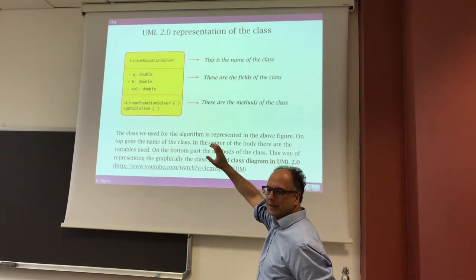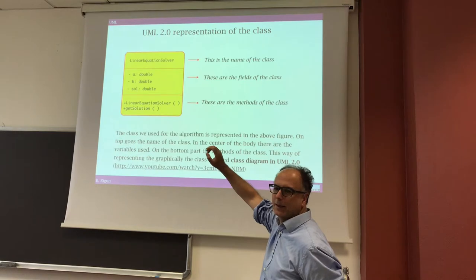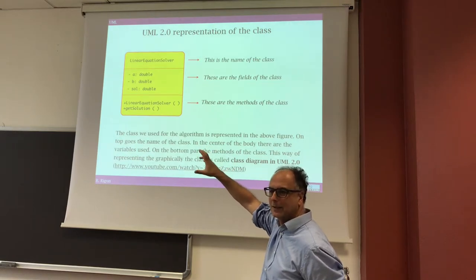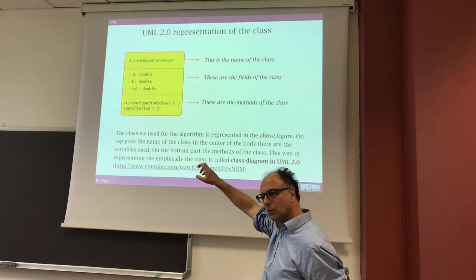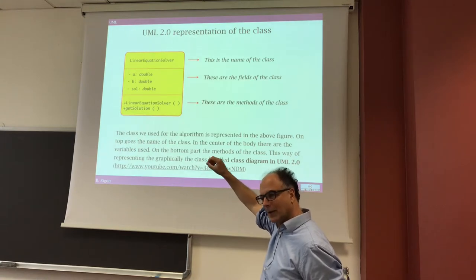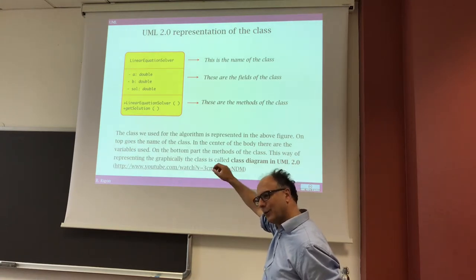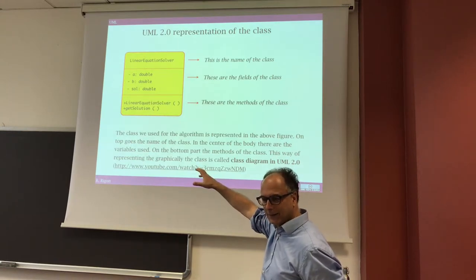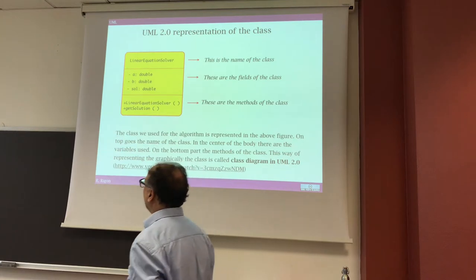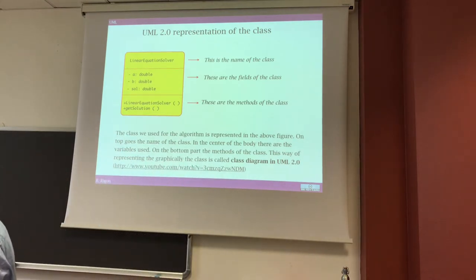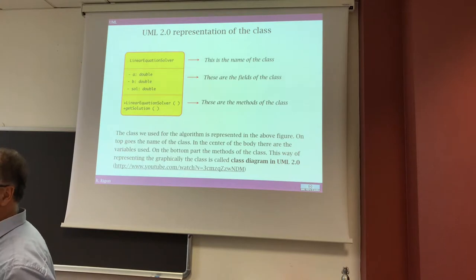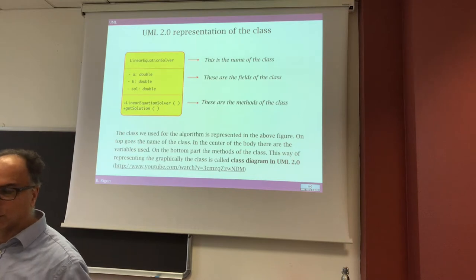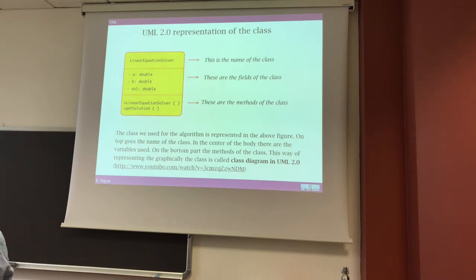Fields could be classes — fields can be classes — so you can have a class that contains fields that are classes, which in turn can be classes of classes, and classes of classes of classes. It can be very complicated to understand how an object-oriented program works.